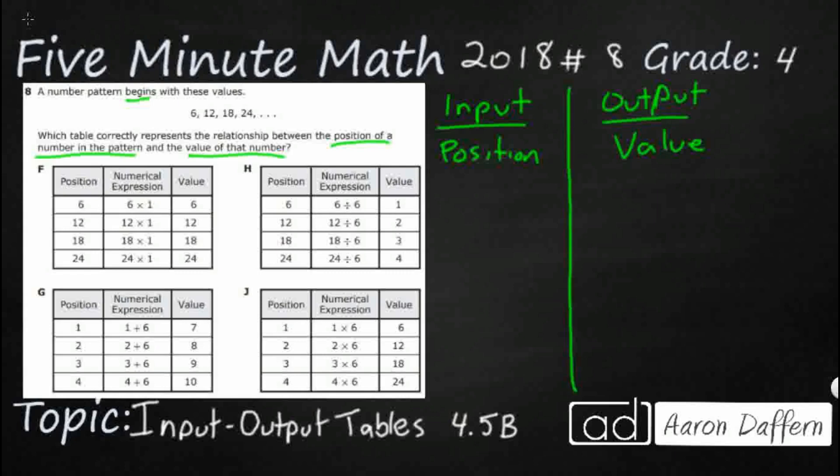Now output is going to be the value of that number. And all they've given us are the values: 6, 12, 18, 24, because it says those are the values. So they've given us those four. We can copy them down here: 6, 12, 18, 24.